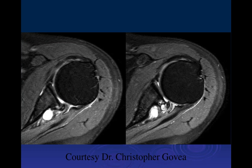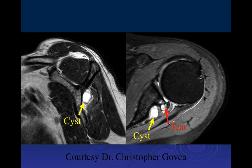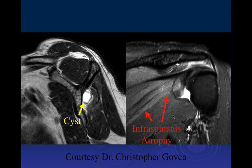Next case: two axial PD fat-saturated images of the shoulder showing edema within the posterior glenoid, a torn posterior labrum displaced proximally, and a large cyst tracking posteriorly along the glenoid in the location of the spinal glenoid notch. On the sagittal T2 image the cyst is again visible. Muscle belly signal changes are subtle here — not as significant as what was seen before. A follow-up image does show edema within the infraspinatus from denervation.